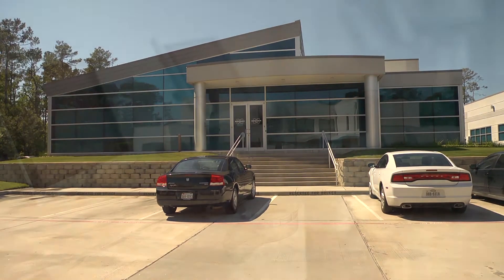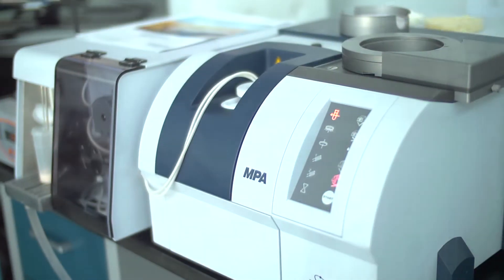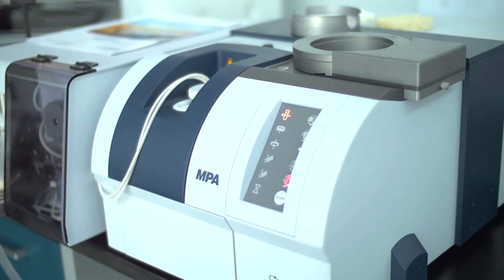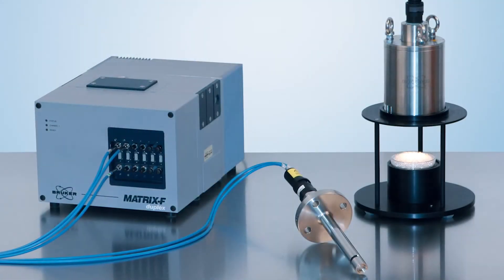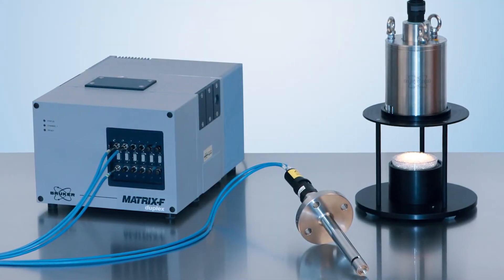Bruker's FT-NIR product line includes the Tango, the MPA and Matrix I spectrometers for lab and at-line applications, as well as the Matrix F-Series for process control.